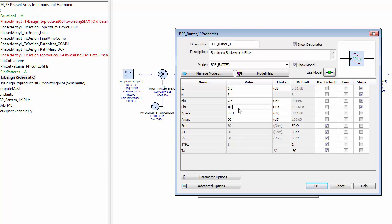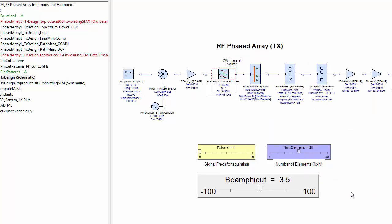We reduced this bandwidth, the bandpass filter characteristic from that to 9.5 to 10.5 gigahertz.